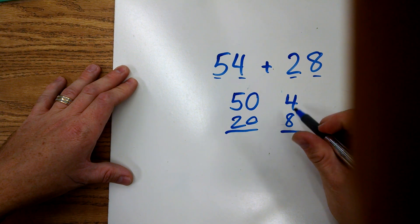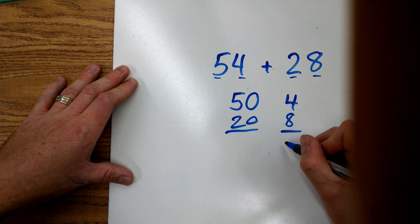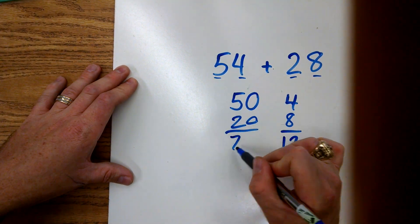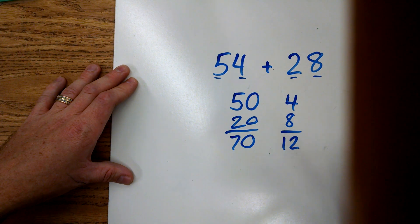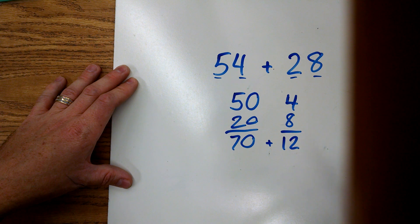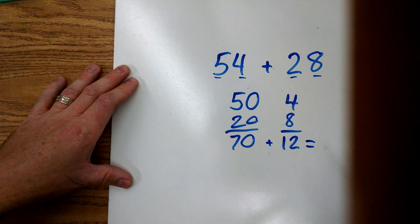8, 9, 10, 11, 12. Okay. And 5 and 2 is 7, so 50 plus 20 is 70. All we have to do at this point is add them back together. Can you guess the answer?